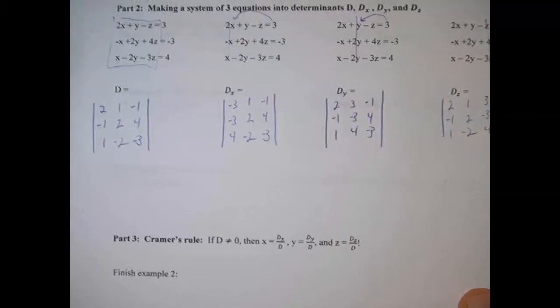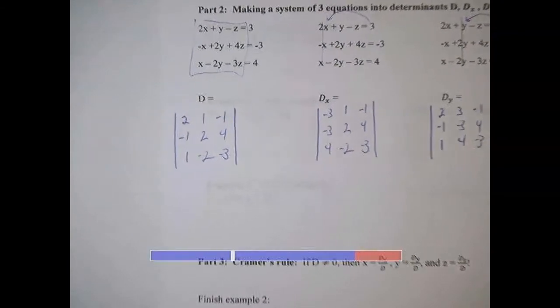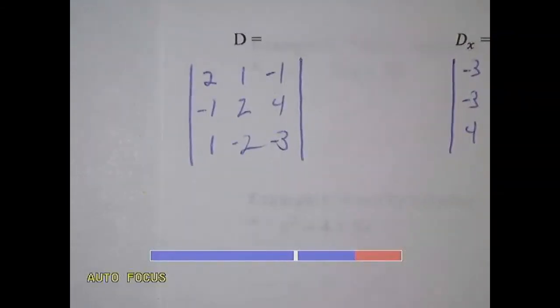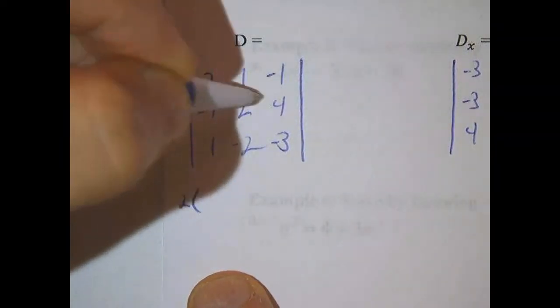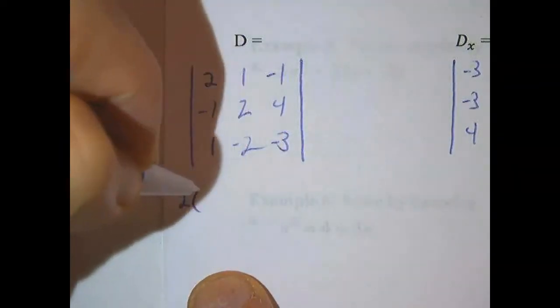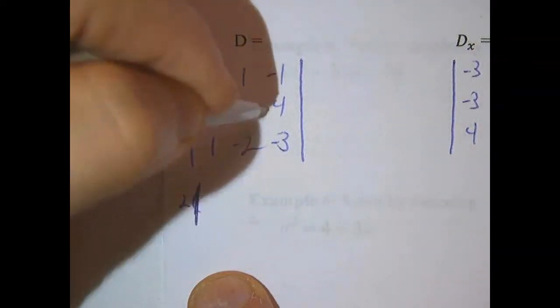I'm going to do the first one with you. And then I'll kind of pause the video and just show you the answers to the others. So let's just do one more together. So we've got 2 times this one right here. 2 times 2, 4, negative 2, 4, negative 3.